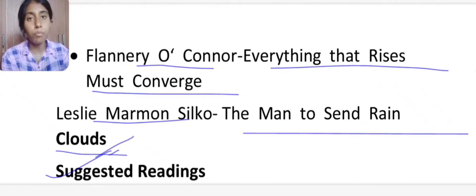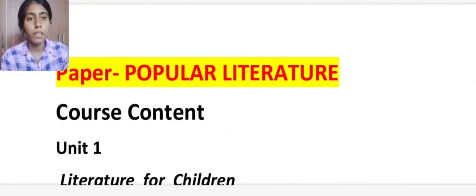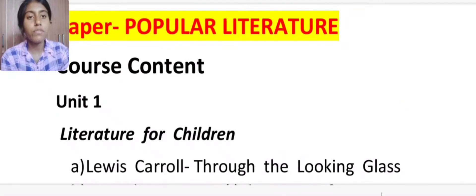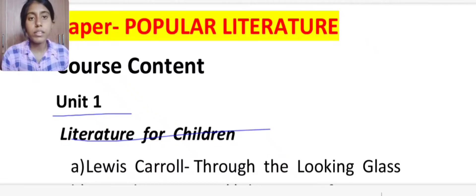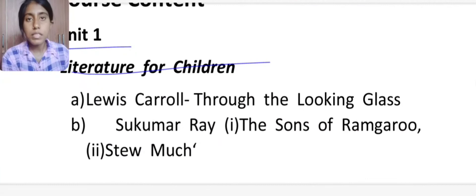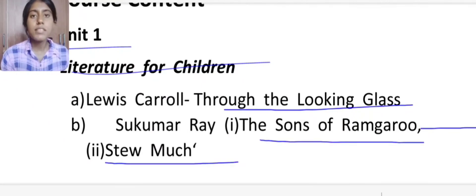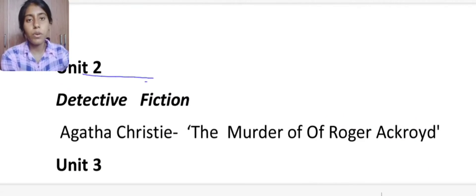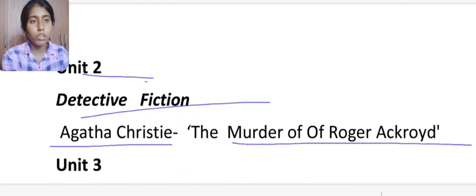Now I will discuss about the syllabus of Popular Literature. So in Popular Literature, Unit 1 is Literature for Children. In Popular Literature, there are different genres. Literature for children, you have Lewis Carroll's Through The Looking Glass, this is a really wonderful novel, and then Sukumar Ray's The Sons of Raghuram and Stevemuch. Then if we talk about Unit 2, you have to read Detective Fiction. You have to read Agatha Christie's Murder of Roger Ackroyd.